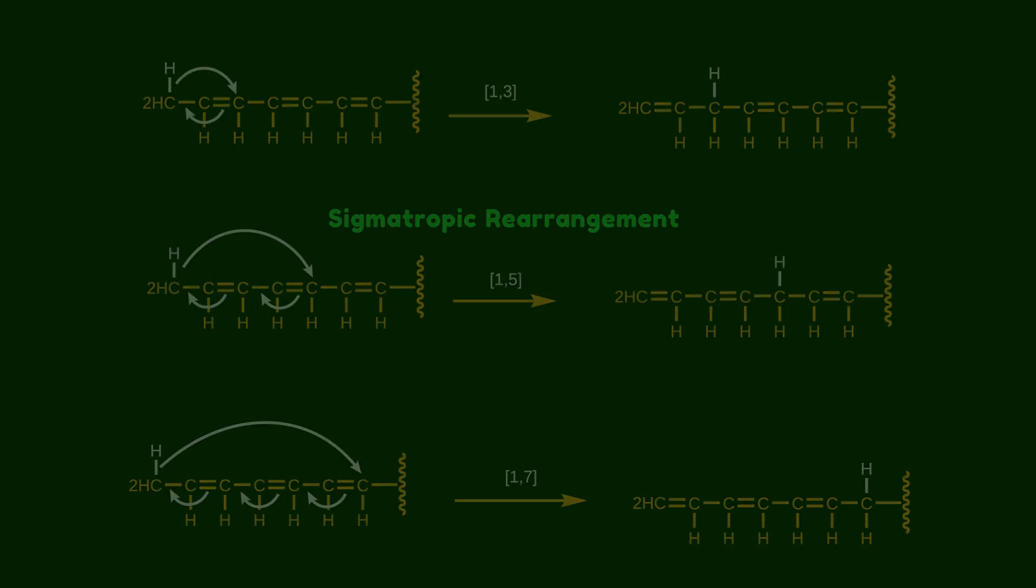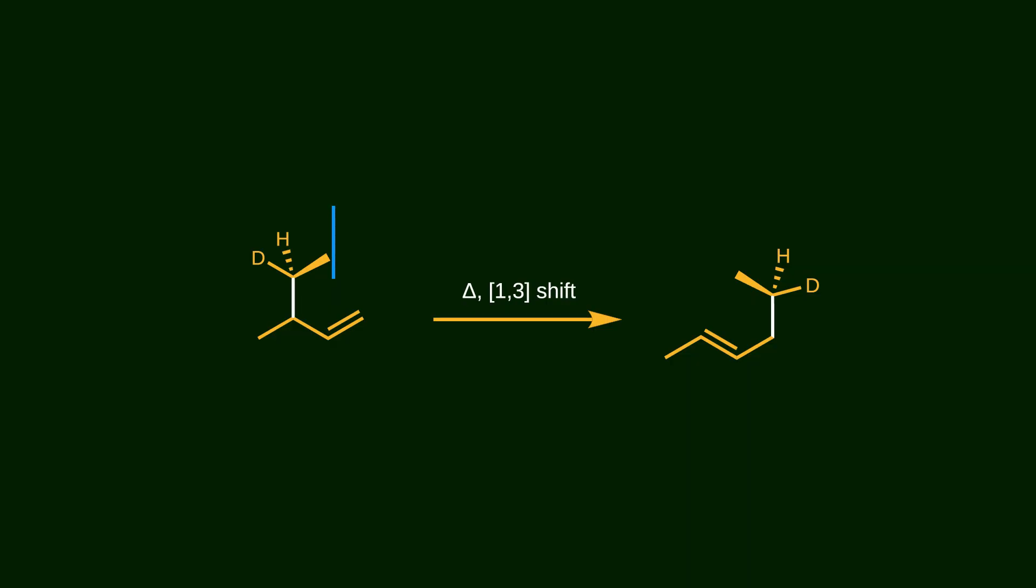For example, consider butadiene containing an alkyl substituent in its 3 position. Under elevated temperature, the alkyl group migrates to the terminal carbon of the double bond. And at the same time, the double bond shifts its position. It looks like the alkyl group walks through the double bond.